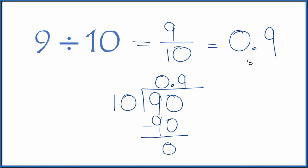That's what we found up here. So in answer to our question, when we divide 9 by 10 we get the fraction 9 tenths or the decimal 0.9. This is Dr. B, and thanks for watching.